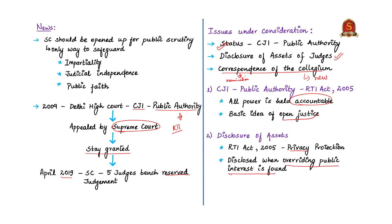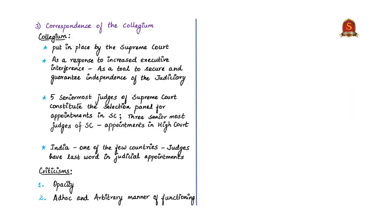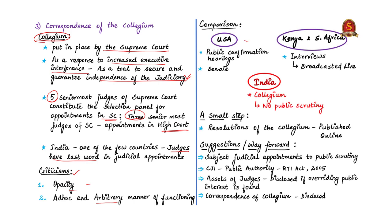Regarding the correspondence of the collegium, let us first discuss briefly about the collegium. The collegium was first put in place in India by the Supreme Court for judicial appointments as a response to increased executive interference and to secure the independence of the judiciary. It consists of the five senior-most judges of the Supreme Court as a selection panel for Supreme Court appointments, and three senior-most judges of the Supreme Court for High Court appointments. India is one of the few countries where judges have the final say in judicial appointments in the higher judiciary. This collegium system, however, faces major criticism of opacity — its correspondence is not visible to the public — and too often its decisions are taken in an ad hoc and arbitrary manner. The author compares judicial appointment accountability to the USA, Kenya, and South Africa.